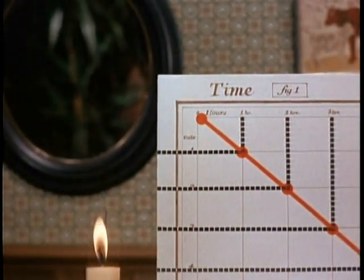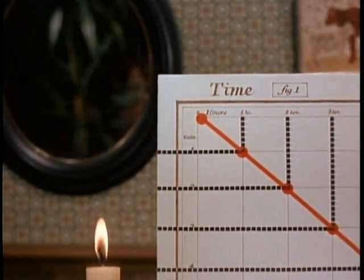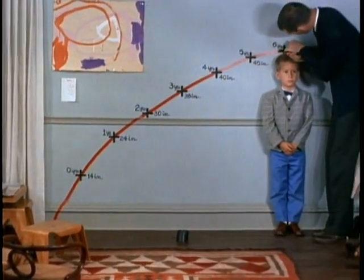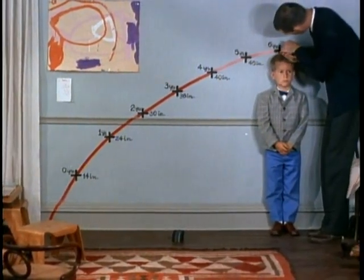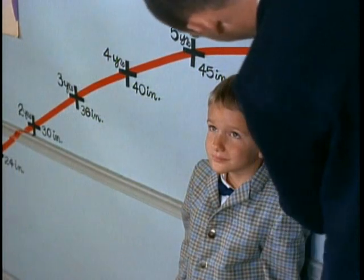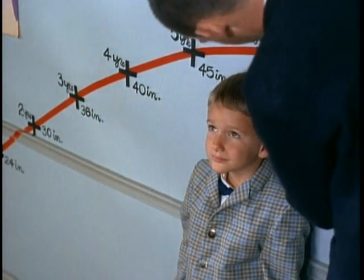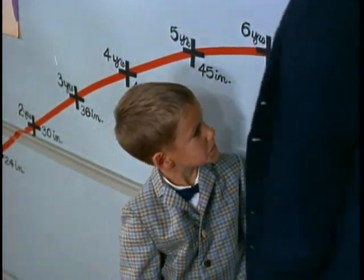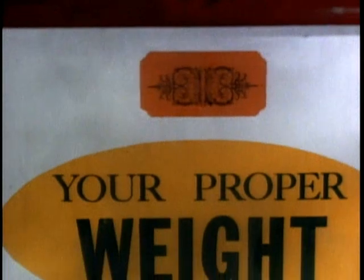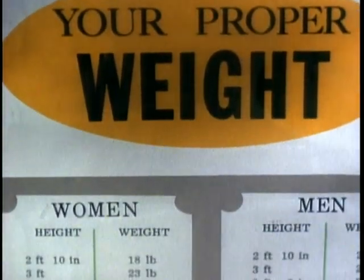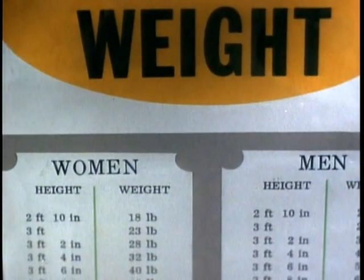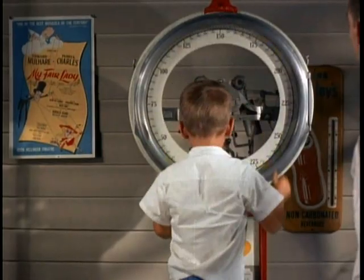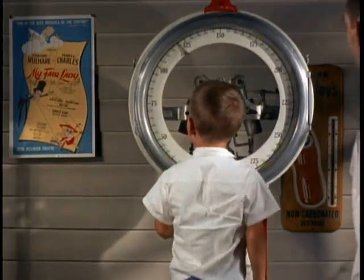The candle gets shorter with time. The boy gets taller with time. His height is a function of time because it has a definite value at any instant. Your proper weight is a function of your height, and the number to which the needle points is a function of your weight.